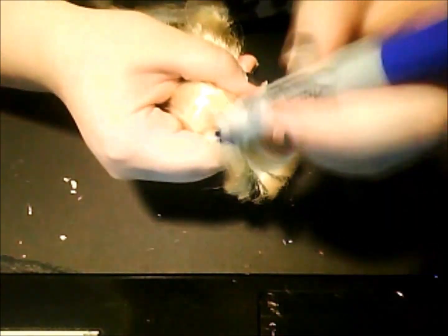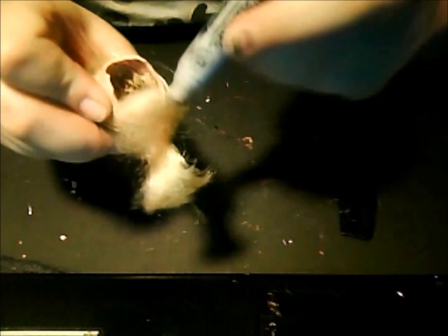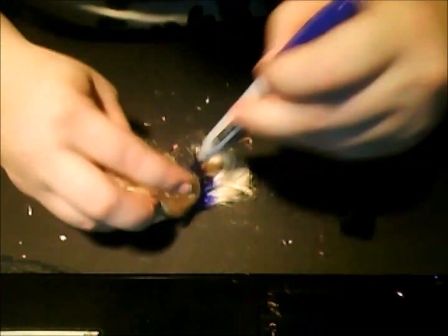Now coloring time. It's easier to use a paper plate to color the hair on. Comb out the hair before you color it and after you have colored it.